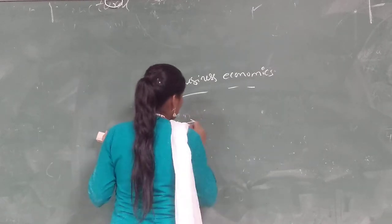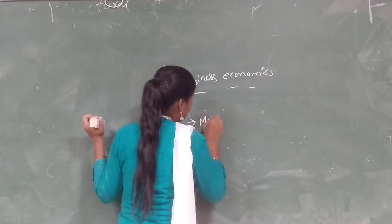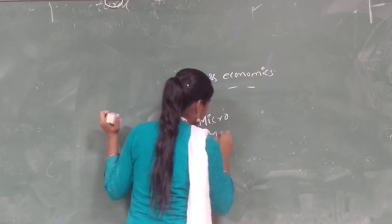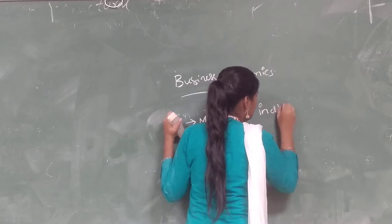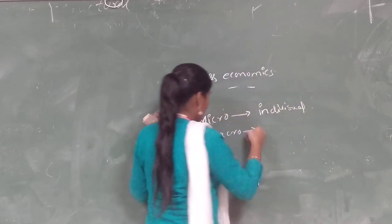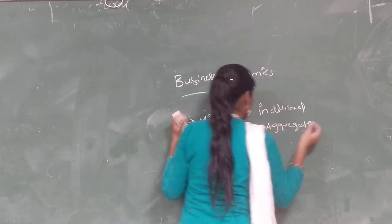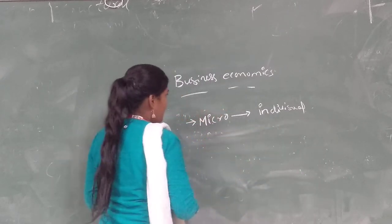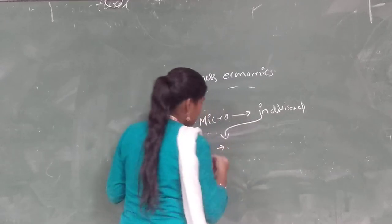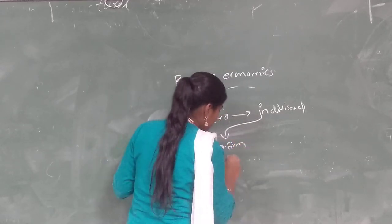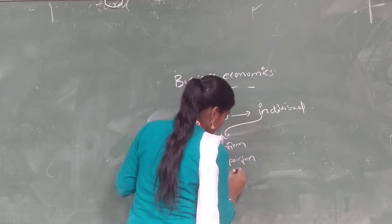Now we move on to the parts, or types, of economics: microeconomics and macroeconomics. Microeconomics deals with individuals, whereas macroeconomics deals with aggregates. First we will see what is microeconomics. Microeconomics deals with individuals — a firm, a person, or a household.